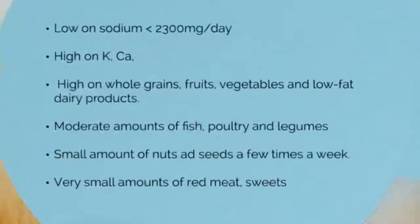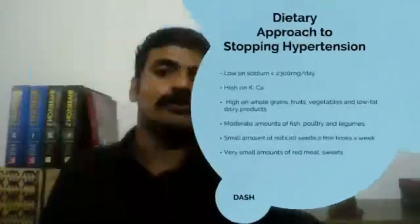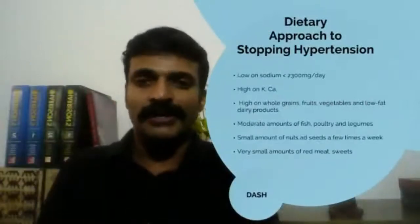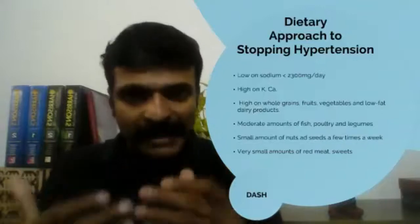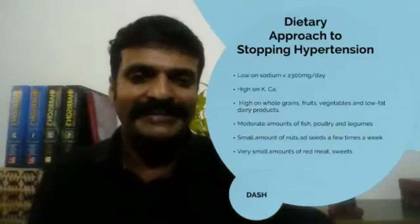Taking a quick look at the DASH diet — Dietary Approaches to Stopping Hypertension — it is low in sodium and high in potassium and calcium. It emphasizes whole grains, fruits, vegetables, and low-fat dairy products, and avoids processed food. Protein comes from fish, poultry, and pulses in moderate amounts; nuts and seeds can be added. Very small amounts of red meat and processed carbohydrates such as sweets are allowed.